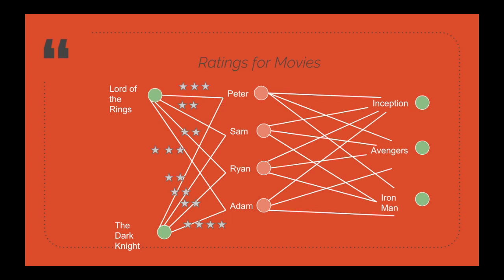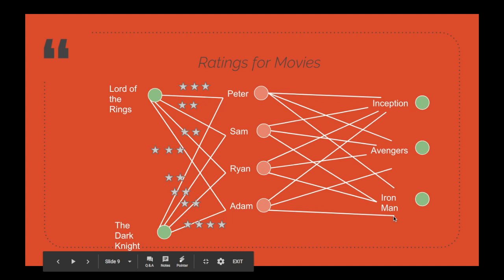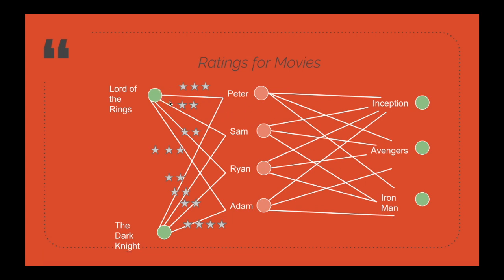In a graph database you can query directly by relationships — you simply request user Peter and his corresponding ratings for movies, getting results in a JSON-like format with all relationships already tied together, faster than a traditional database. The data is stored in a nested structure with relationships, where for example Peter rated Lord of the Rings with three stars, and that three-star rating is a property on that relationship. You can have multiple properties for a relationship.